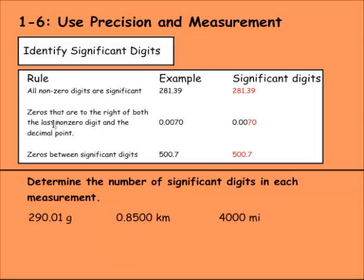Some zeros can be significant though. So zeros that are to the right of both the last non-zero digit and the decimal point. So that's a big and. So it has to be to the right of the decimal point and to the right of the non-zero digit. So this would be a significant zero.